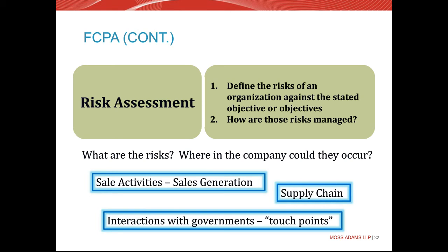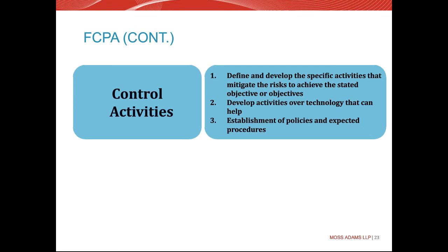Once you've identified risks through your risk assessment, the next step is linking them into control activities. The second part of the FCPA was to accurately record transactions and have defined internal controls around each of them. Control activities means developing specific activities that mitigate the risk to the stated objective — in this case, the FCPA. It involves developing activities over transactions themselves, over technology that may exist, assessing where risks may occur, and establishing policies and procedures to define what activities should be done and how they should be transacted.